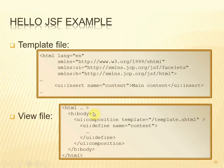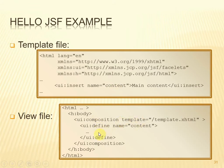In the view file there are two elements that are important. The first one is composition. The composition element has an attribute called 'template' which links to the template file. Within the composition element there is a define element, and this is what links to the content placeholder. So in the template we have a placeholder called 'content', and in the view we're saying we're using that template and this is the definition that is to replace the placeholder in the template.